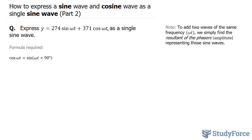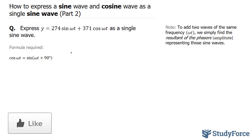To do this question effectively, you'll need to understand that cosine omega t is equal to sine omega t plus 90 degrees. So instead of using cosine, we can use this relationship instead. Let's rewrite this equation in terms of sine exclusively.